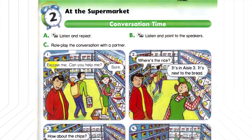Number 1. Excuse me, can you help me? Sure. Number 2. Where's the rice? It's in aisle 3. It's next to the bread.